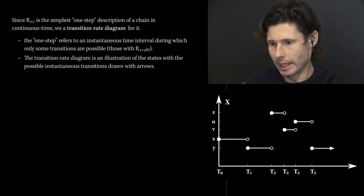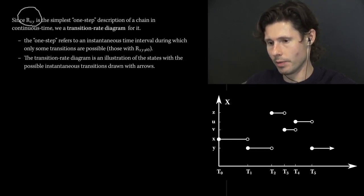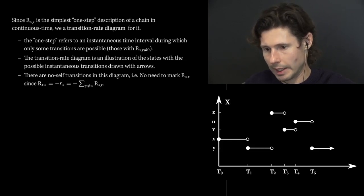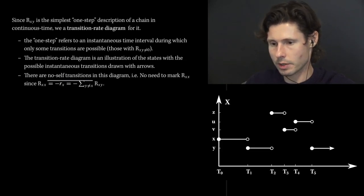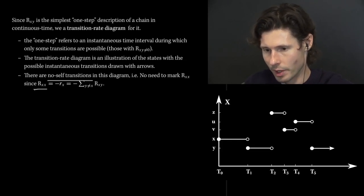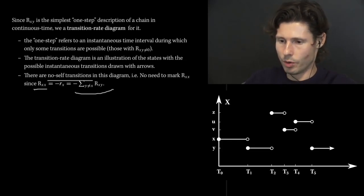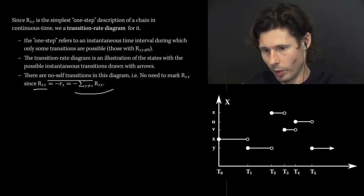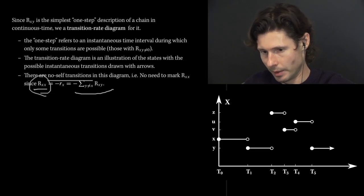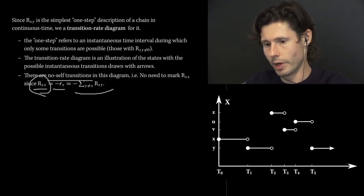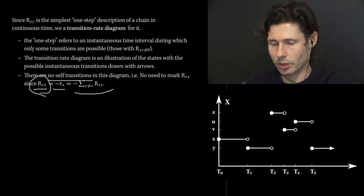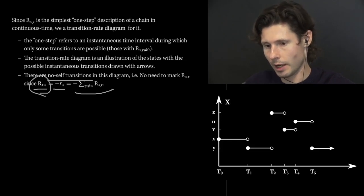The transition rate diagram has a circle for every single state and arrows between any two states x and y whenever the transition rate is non-zero. One key difference from transition probability diagrams is that there are no self-transitions in this context. The reason is that the entry Rxx can always be obtained from the sum of the rest — because the row sums to zero, the diagonal entry Rxx has to be the negative of the total rate out. So we never need to draw a self-transition, because we can determine it from this identity.